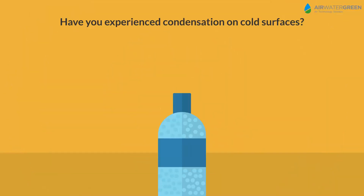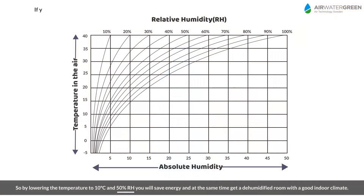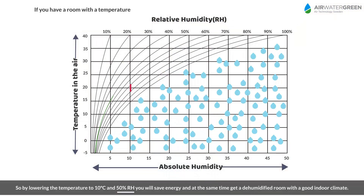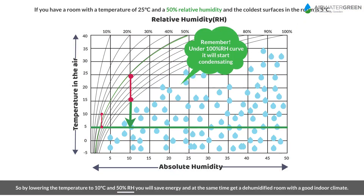Have you experienced condensation on cold surfaces? If you have a room with 25 degrees Celsius and 50% relative humidity, and the coldest surface in the room is 5 degrees Celsius, remember that below the 100% relative humidity curve it will start condensating.